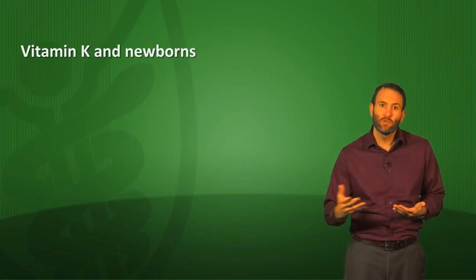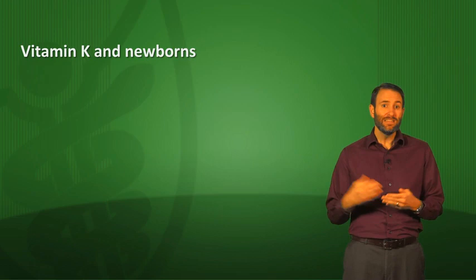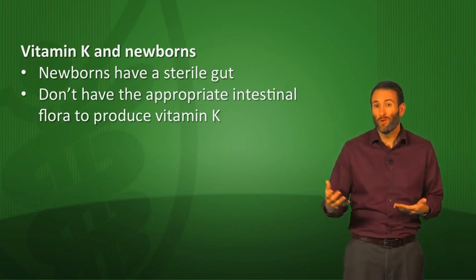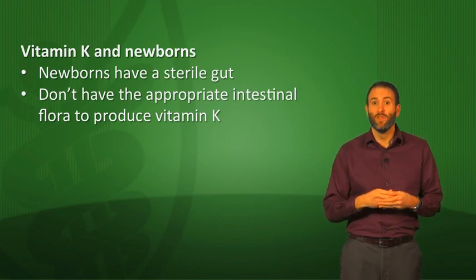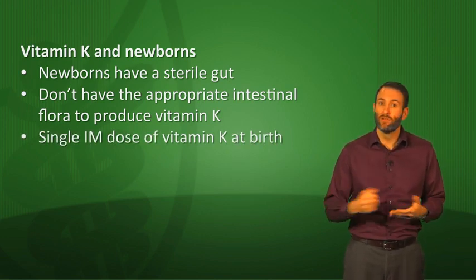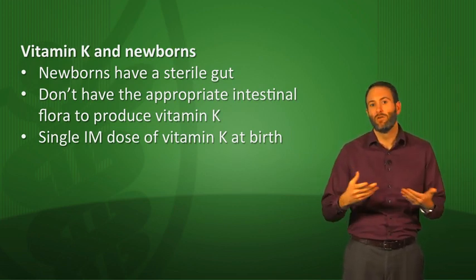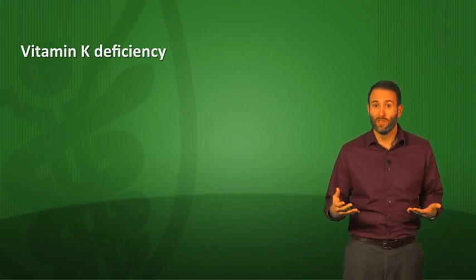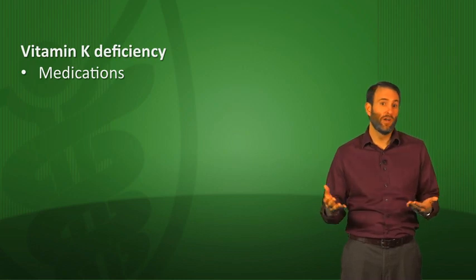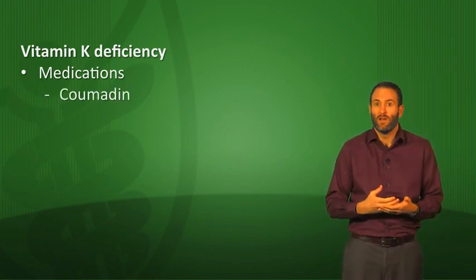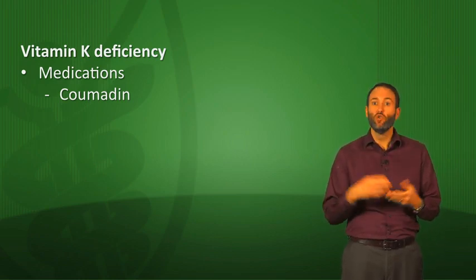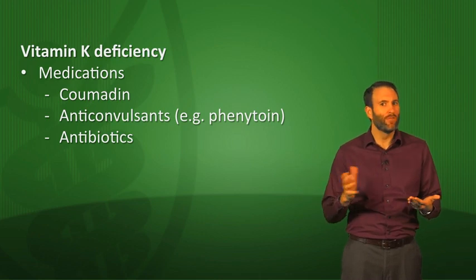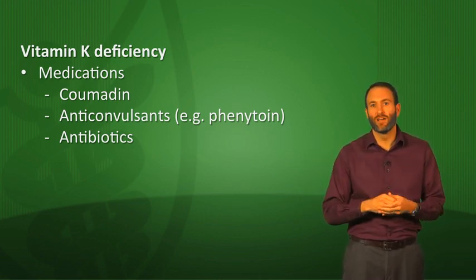A high-yield topic is the relationship between vitamin K and newborns. Newborns can have problems with hemorrhage because they have a sterile gut, so they lack the intestinal flora to produce vitamin K, and breast milk provides only about a fifth of the needed vitamin K. It's recommended that newborns receive a single intramuscular dose of vitamin K at birth to carry them over until they develop adequate gut bacteria. What causes vitamin K deficiency? Usually medications: Coumadin is a vitamin K antagonist used as an anticoagulant. Also anticonvulsants like phenytoin, and antibiotics that wipe out gut bacteria.